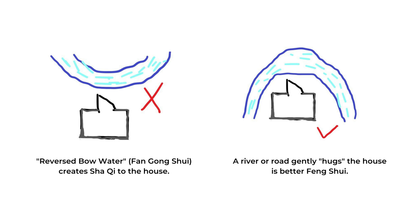One of the famous feng shui sha qi is called the fang gong shui, and it's not good to have the house near the tip of the curve.